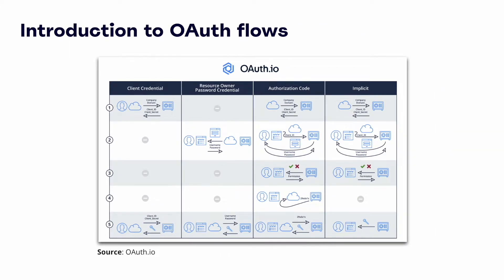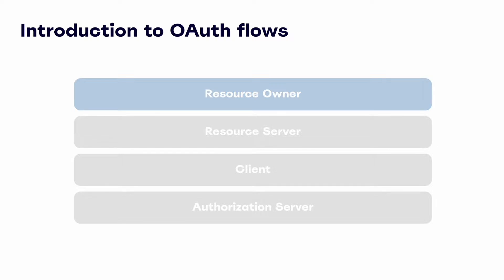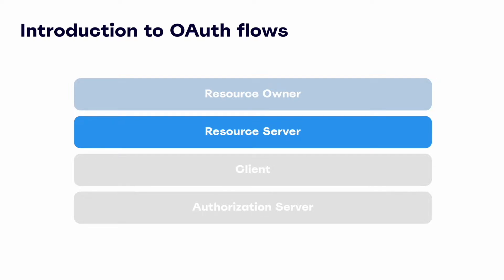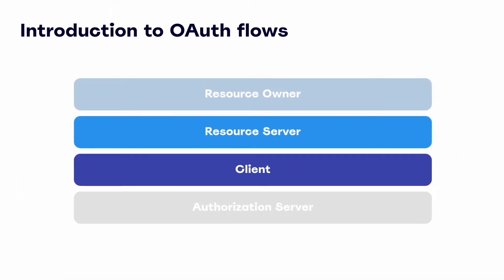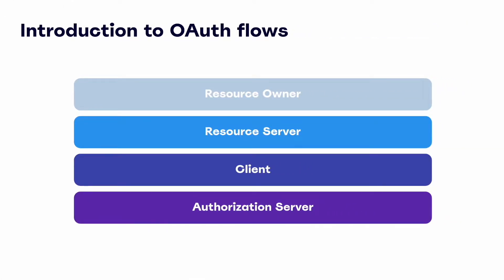OAuth 2.0 supports various different flows, or what you'll see referred to as grant types. Each of these flows shares the same basic fundamentals: they mostly include four components. First, a resource owner — the entity that owns the data in the resource server, such as a Miro account owner. Next, a resource server — the OAuth term for the API that stores data an application wants to access, like a Miro-owned API. Then there's the client — your app, the thing requesting access to data. And lastly, the authorization server — the main apparatus that enables the OAuth flow.